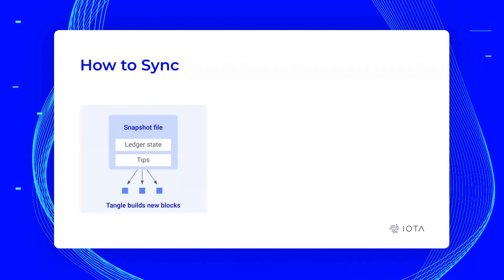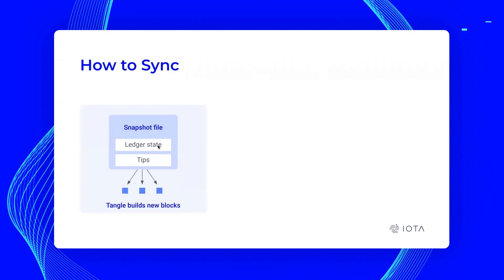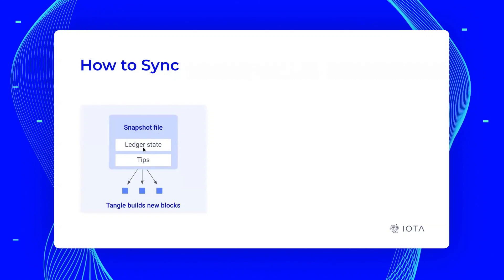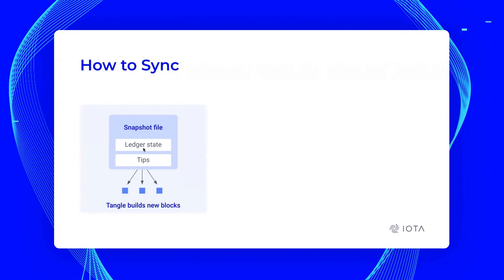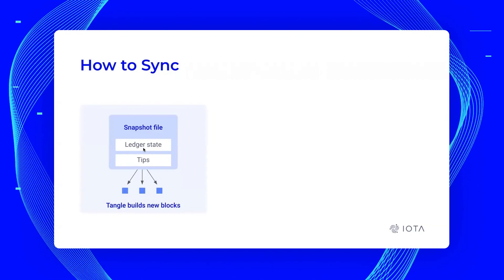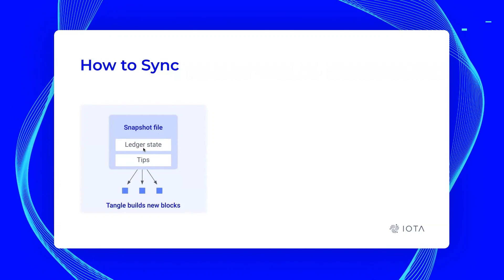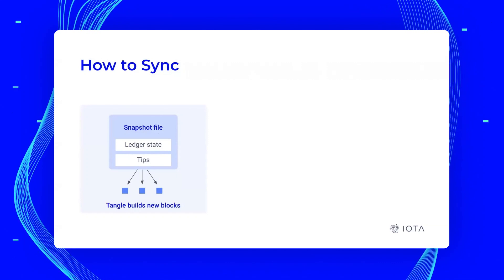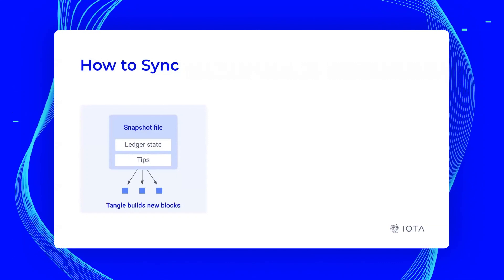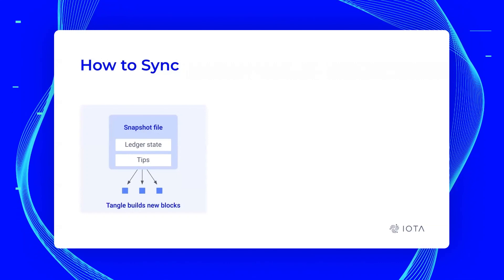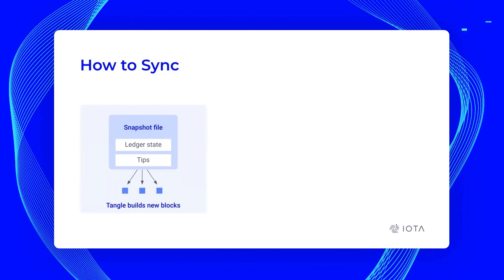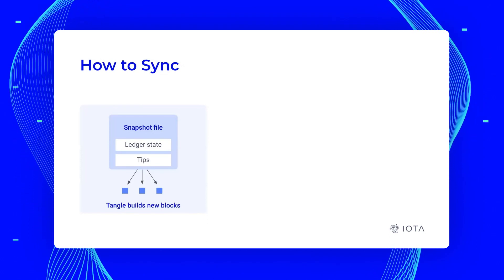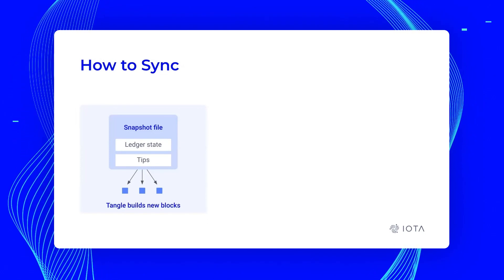This is so important, because whatever is in the snapshot file — whatever is committed to in the snapshot file — is what is recorded and what is not. DLTs are all about immutable record. So what is the immutable record? It's contained in the snapshot file.